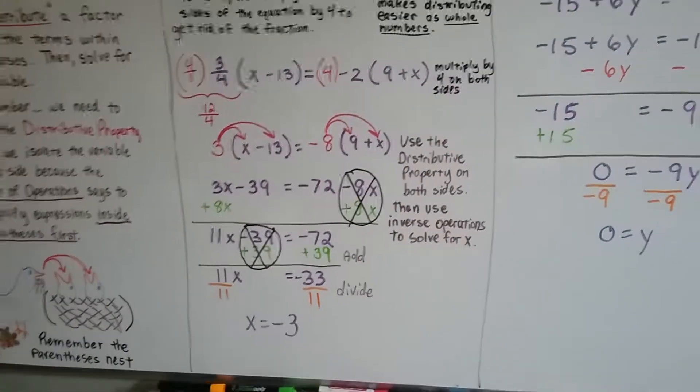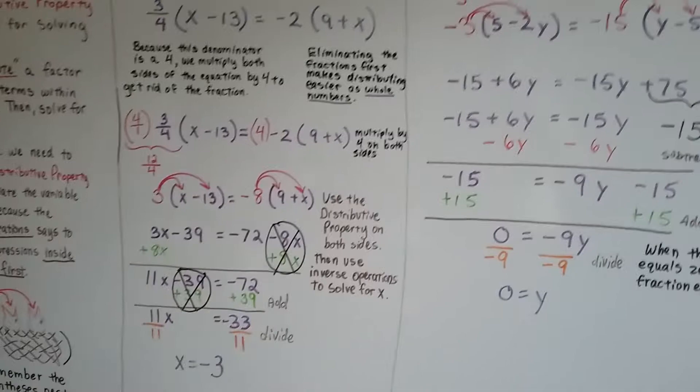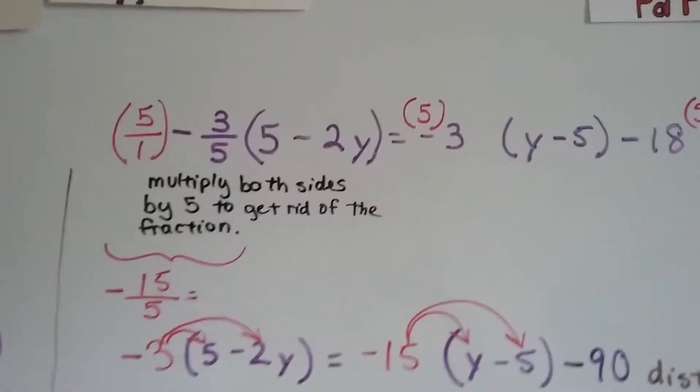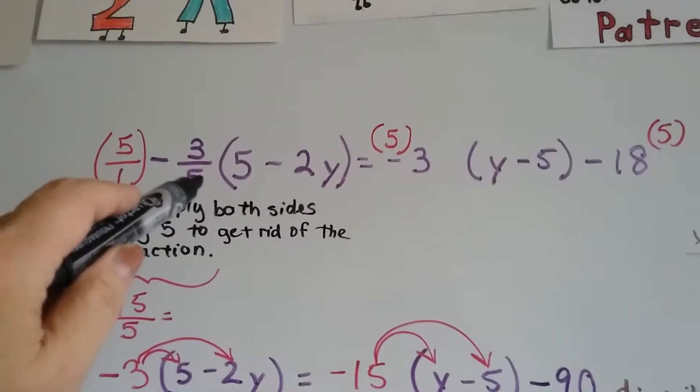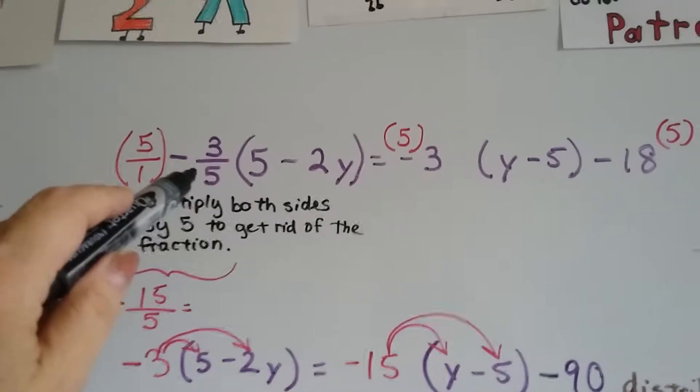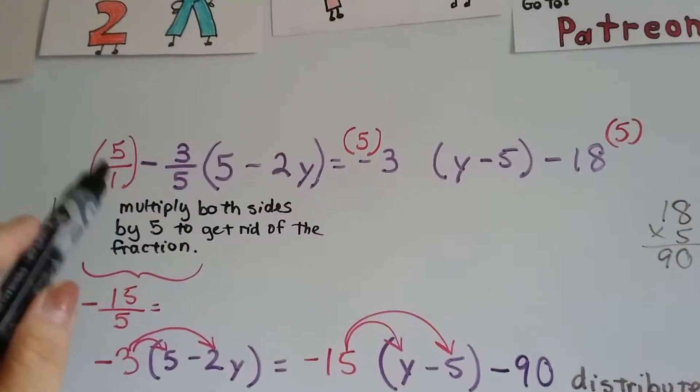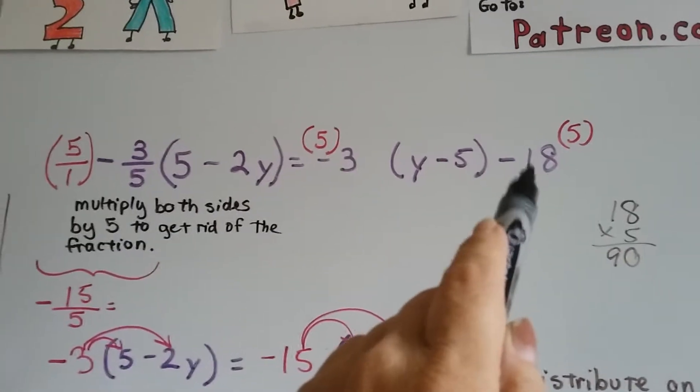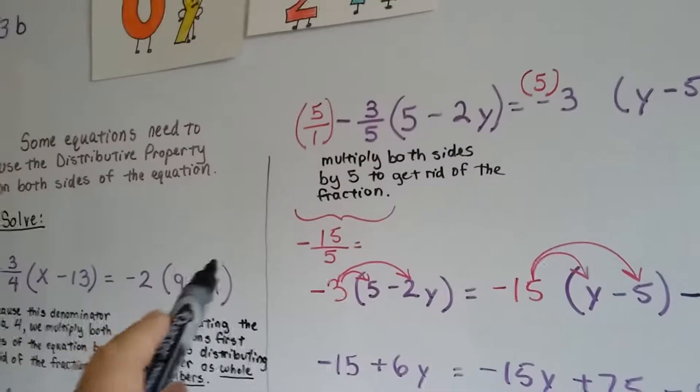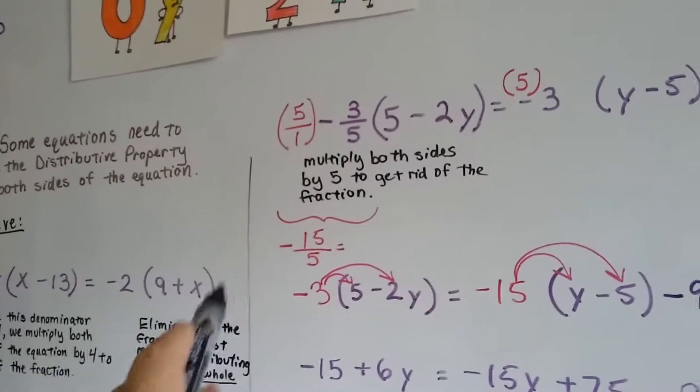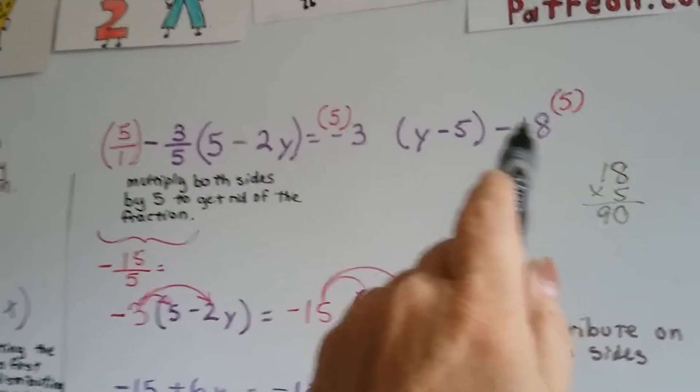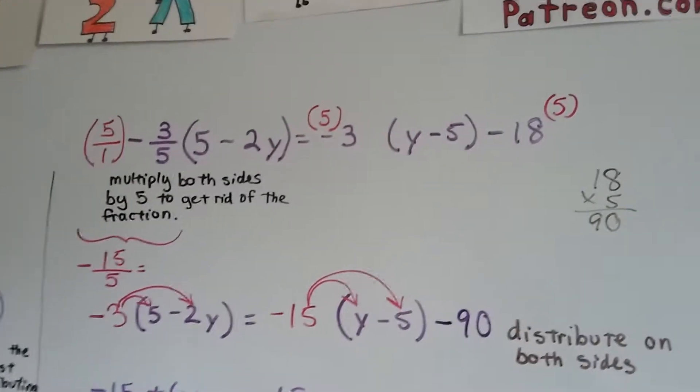Are you able to follow that? Let's try it again. This time, we've got a 5 as our denominator in negative 3/5. So we're going to multiply each part of these terms by 5, even this guy. In the previous problem, we didn't have anything behind this parentheses. Now we have this minus 18 back here. He needs to be multiplied by 5 also.